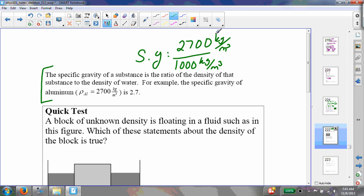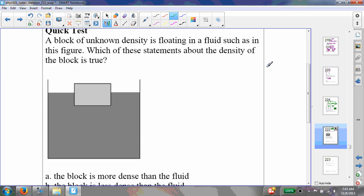And then that gives the specific gravity, which is 2.7. It's just a way of showing the density with a number relative to water. Try this quick test about the density.